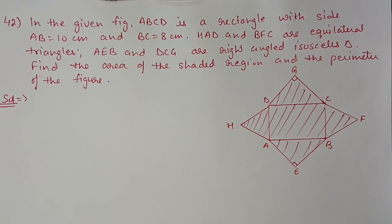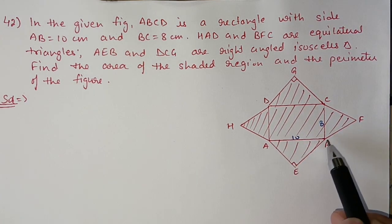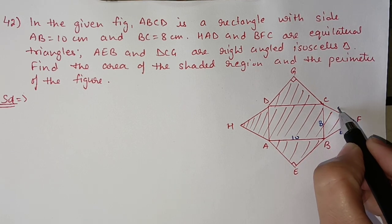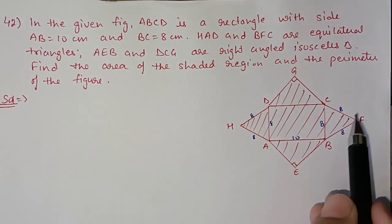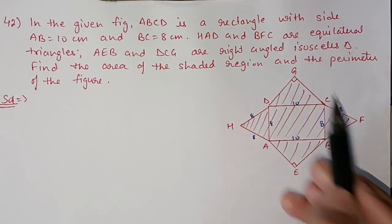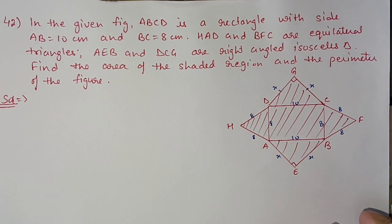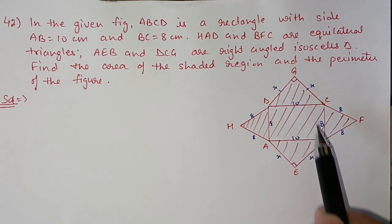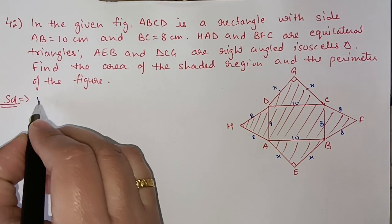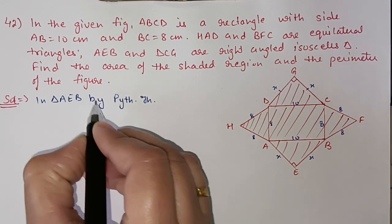Question 42: In the given figure, ABCD is a rectangle with side AB = 10 centimeters and BC = 8 centimeters. HAD and BFC are equilateral triangles, so all their sides are 8 centimeters. AEB and DGC are right-angled isosceles triangles — their two equal legs can each be taken as x. We need to find the area of the shaded part and the perimeter of the figure.